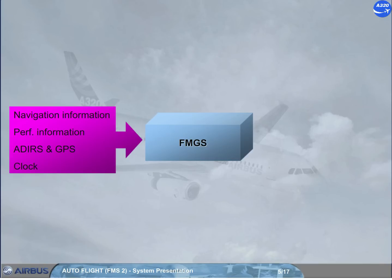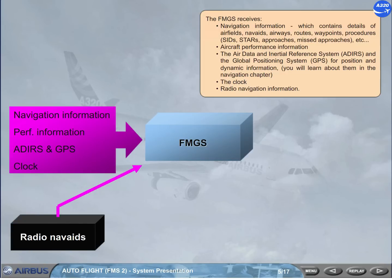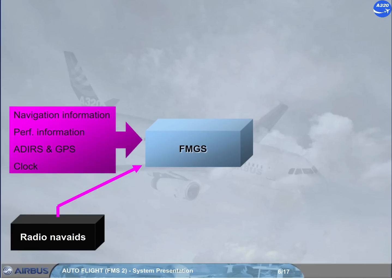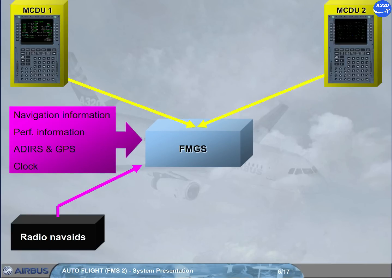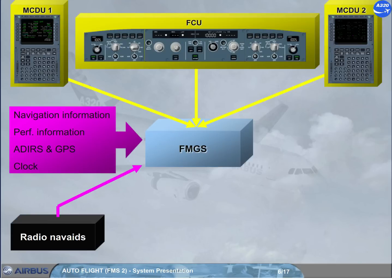The FMGS also receives input from the clock and radio navigation information. The pilots provide inputs to the FMGS using two Multipurpose Control and Display Units, MCDUs, for long-term interventions, and a single Flight Control Unit, FCU, for short-term interventions.